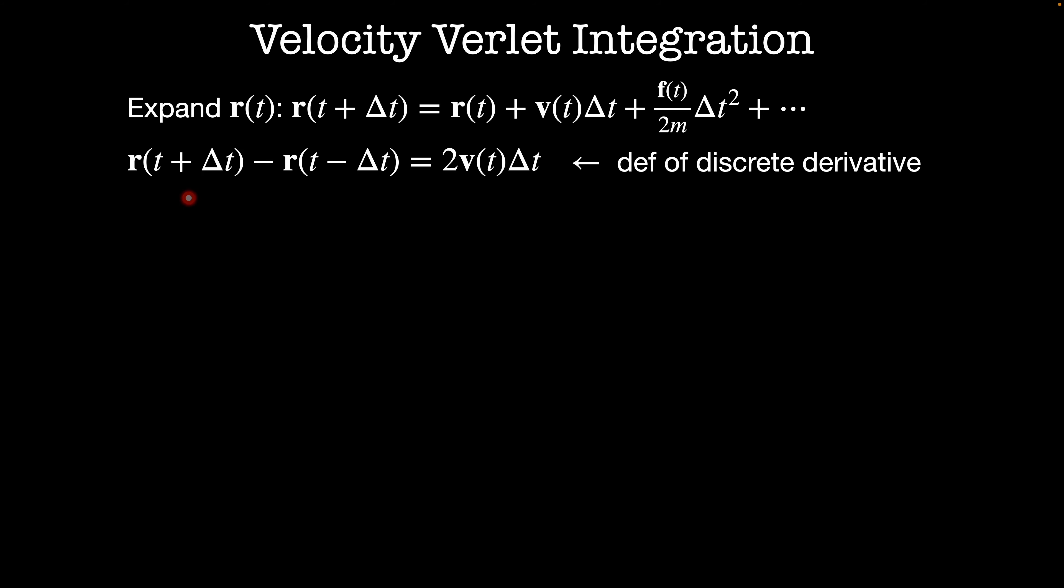This gives me the definition of a discrete derivative. r(t + Δt) minus r(t - Δt) divided by 2 times delta t is equal to the discrete derivative of r, or the velocity at time t. The sum of these two terms removes the velocity term and relates the position at time t to the force at time t. Before we start our integration algorithm, we need to do an initialization step.